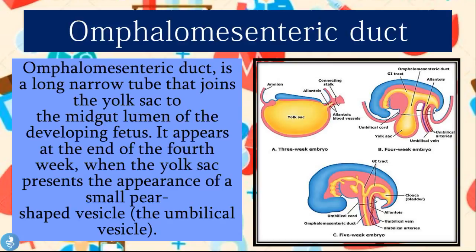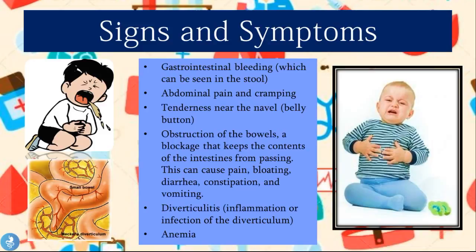The signs and symptoms of Meckel's Diverticulum include: gastrointestinal bleeding which can be seen in the stool; abdominal pain and cramping; tenderness near the navel; obstruction of the bowels — a blockage that keeps intestinal contents from passing, which can cause pain, bloating, diarrhea, constipation, and vomiting; diverticulitis, meaning inflammation or infection of the diverticulum; and anemia.